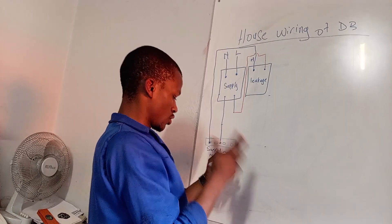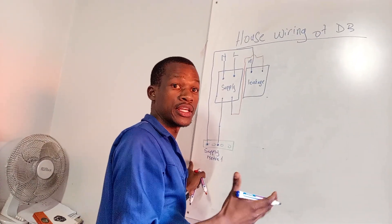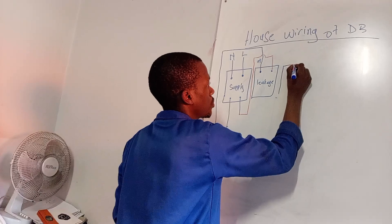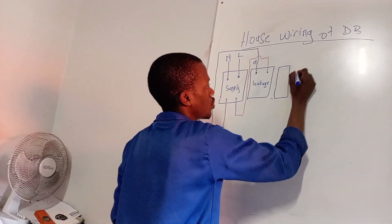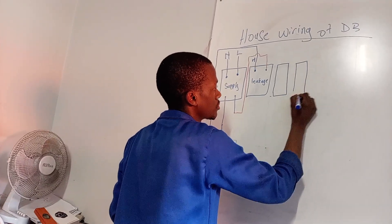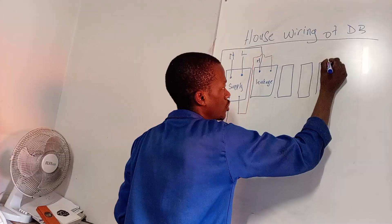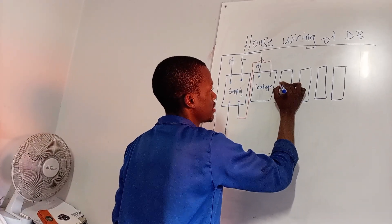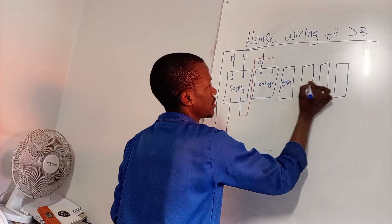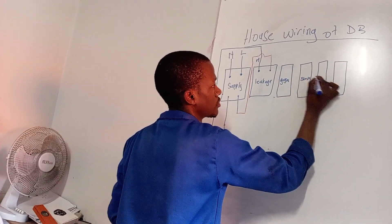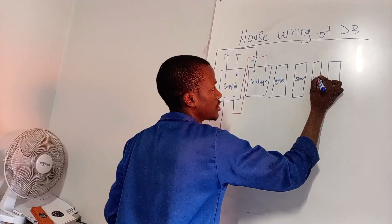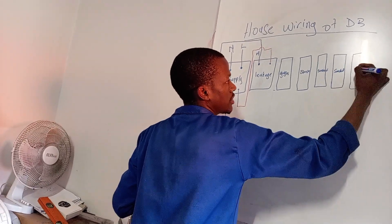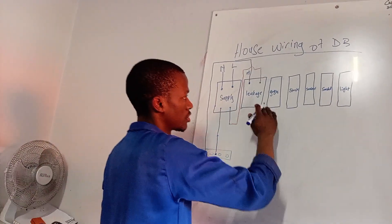Now here come your appliances. Let's start with a geyser — this one will be your geyser, this one will be your stove, and then this one will be your socket. We'll also put one for your lights. These are all breakers — these are all circuit breakers.